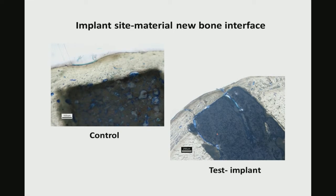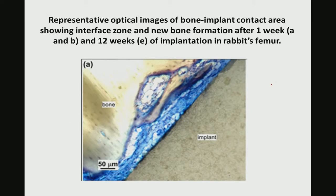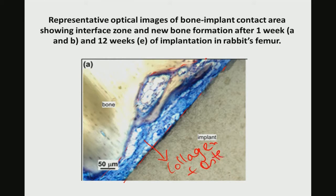In a separate set of histology images, you can see the implant and the region of bone formation at a different magnification. In the test implant after 12 weeks, the blue region in the histology stained image shows collagen as well as osteoblast cells — bone forming cells — and their activity at the bone-implant interface.